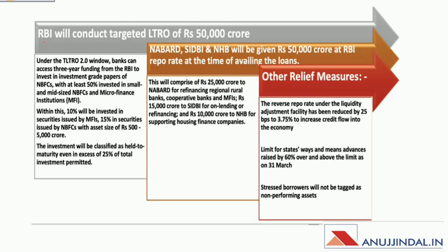In addition, RBI provided several other relief measures to help the economy revive amid COVID-19. RBI gave NABARD, SIDBI, and NHB a total of Rs. 50,000 crore — of which Rs. 25,000 crore to NABARD for refinancing regional rural banks, Rs. 15,000 crore to SIDBI for on-lending and refinancing, and Rs. 10,000 crore to National Housing Bank for supporting housing finance companies. The reverse repo rate under the Liquidity Adjustment Facility was reduced by 25 bps to 3.75%. The limit for states' Ways and Means Advances was raised by 60% over the limit as of 31st March, and stressed borrowers will not be tagged as non-performing assets.